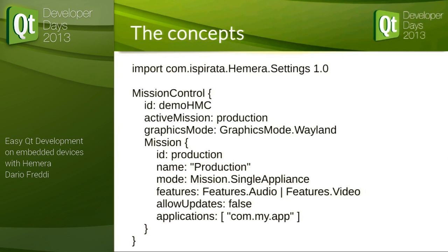A very useful use case is creating a production mission and a maintenance mission. For example, with a domotics panel, you place the real user interface in a production mission. For an installer who comes to maintain your panel, you create a separate application running in its own sandbox with its own privileges — allowing updates, for instance. This guarantees that nothing will ever interrupt the workflow of your users, while the installer is able to make deeper modifications to the OS itself.